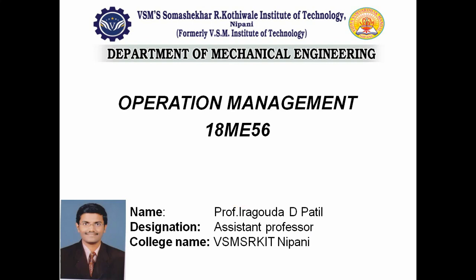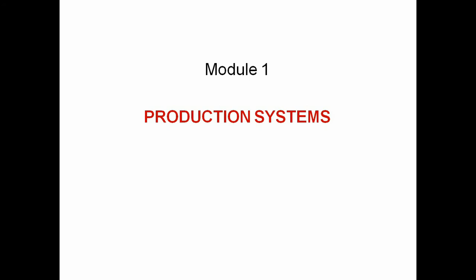Welcome to Lecture 3 on Operation Management. Today I will explain about production systems. As we discussed, there is a difference between production and manufacturing systems — they are totally two different words. Manufacturing is related to the manufacturing process done inside organizations with some machines and operations. Production is related to the selling of products, finance, marketing, and transportation.